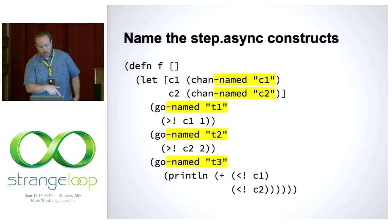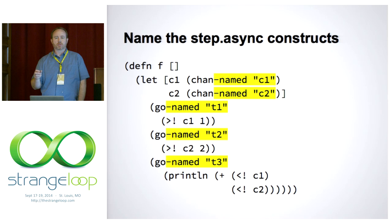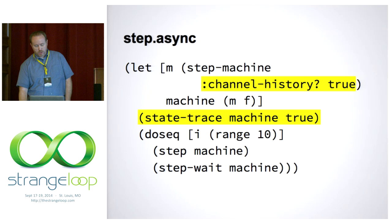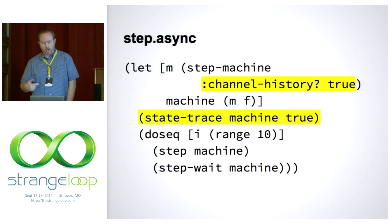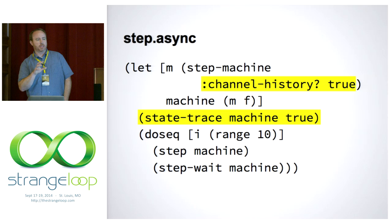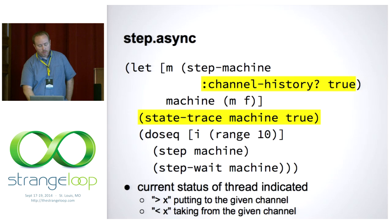If we take it a step further and change the original code to use some features not in core async — here I'm adding actual string labels to the two channels, channel one and channel two, and giving labels to the worker threads as well: t1, t2, and t3. I'll flip a couple of options on the step machine: I'll tell it to keep track of all the history of all the items that go through channels, and I'll flip this other switch to turn on state tracing for the machine. What that will do is every time the core async machine reaches a new state, it'll capture that state — that map with all the threads and channels.